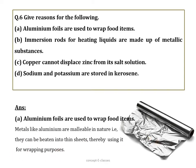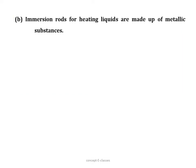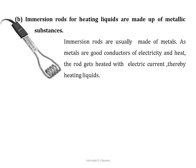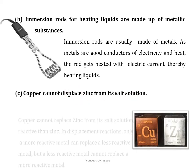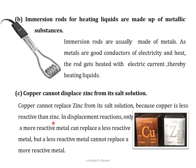(b) Immersion rods for heating liquids are made up of metallic substances: metals are good conductors of electricity and heat. When the rod is connected to an electric supply, it gets heated and thereby heats the liquid. Because metals are good conductors, immersion rods are made up of metallic substances.